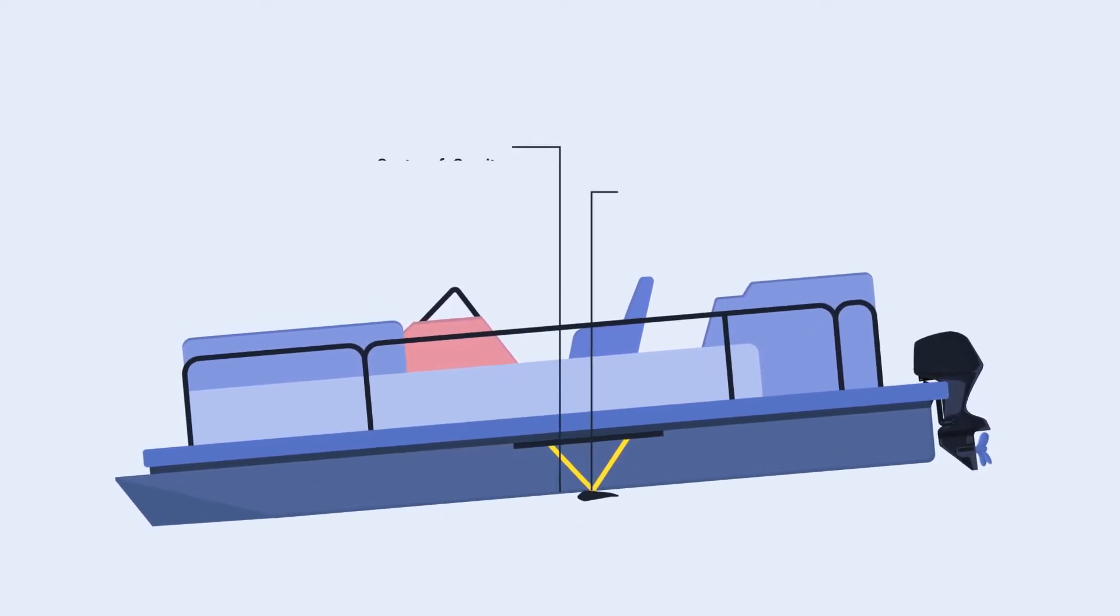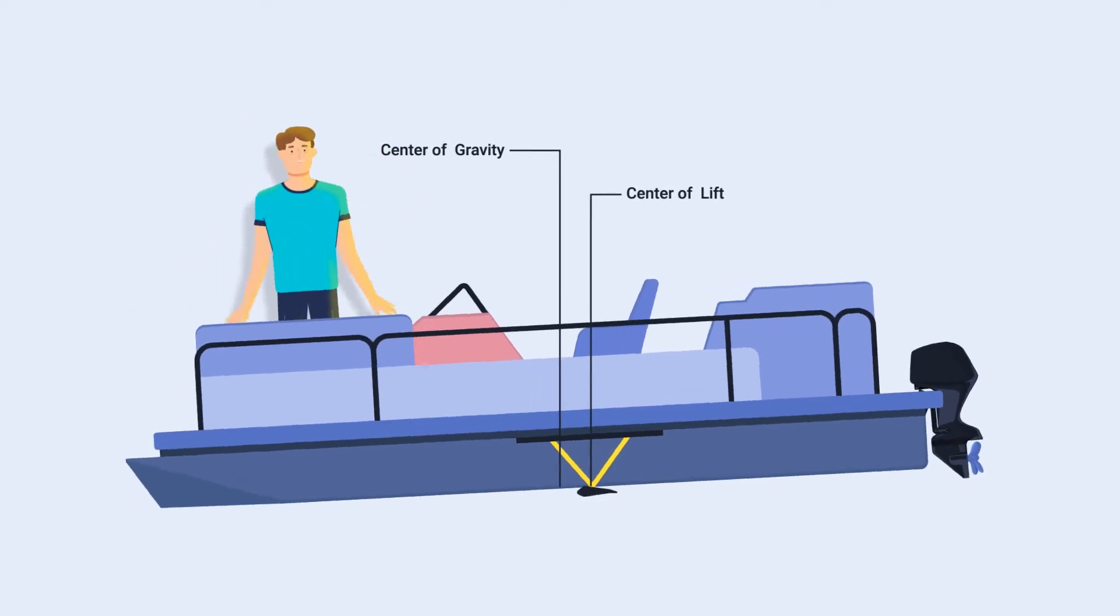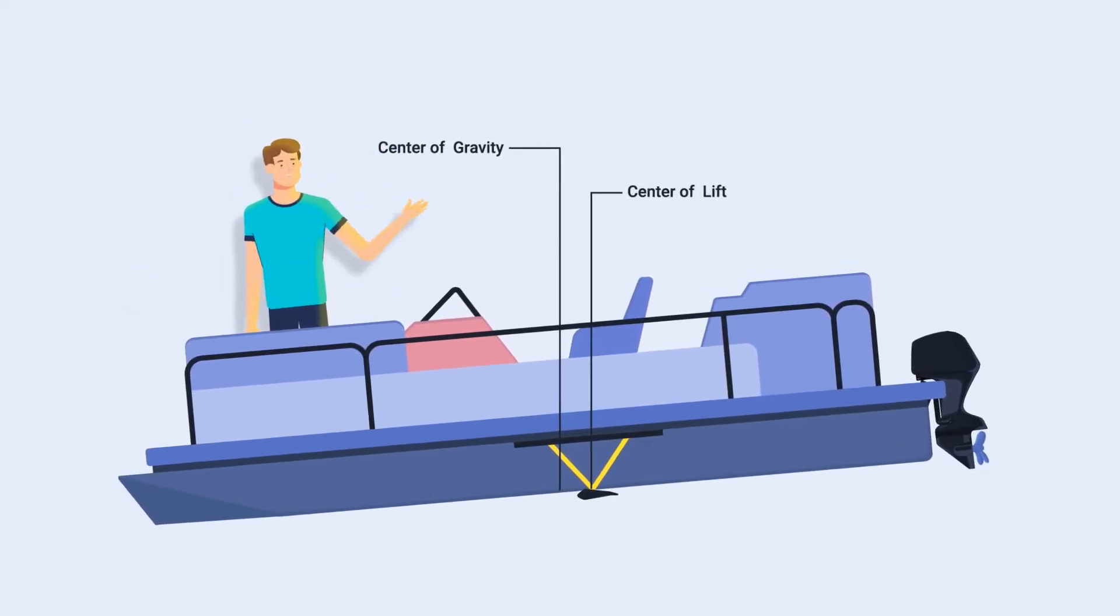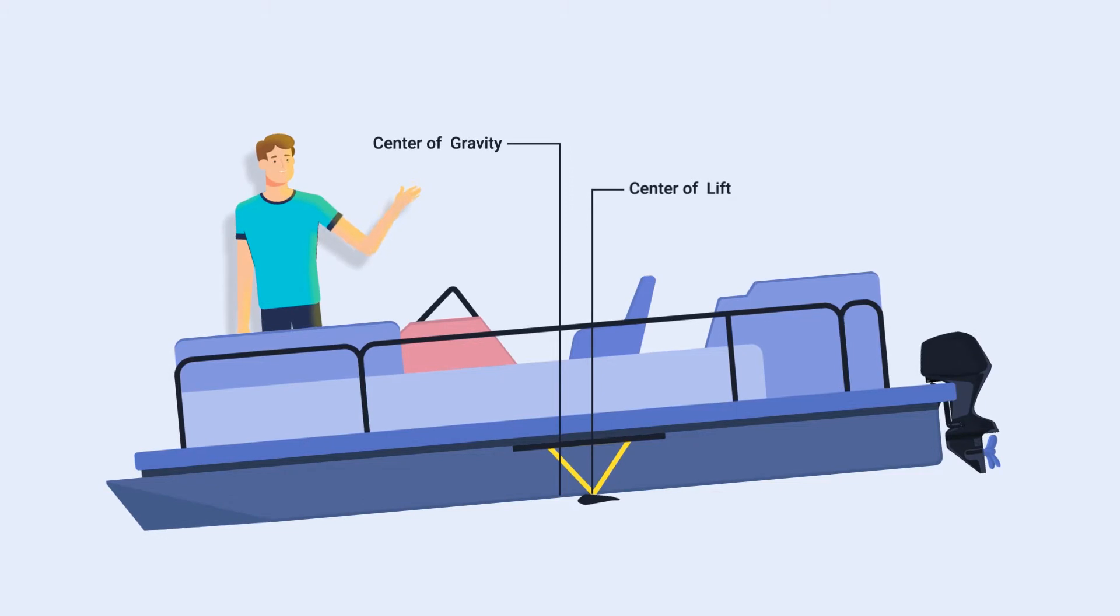But if the COL moves aft of the CG, or a person walks to the front of the boat, then a couple is formed and the pontoon boat will tend to pitch nose down.